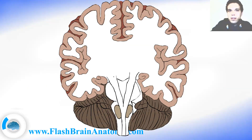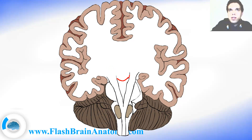Now let's get back to this. These structures over here are the cerebral peduncles. And right between them is the interpeduncular fossa.